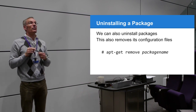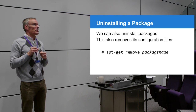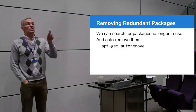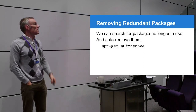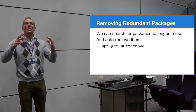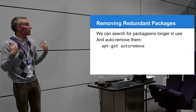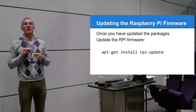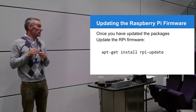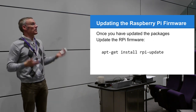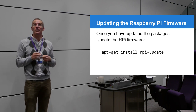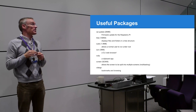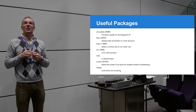To uninstall use `apt-get remove <package name>`. If you've removed a package and other packages are no longer needed, `apt-get autoremove` will search through all packages and dependency files, find anything not required, and delete it to free up space. The first thing I'd do is update the Raspberry Pi firmware: `apt-get install rpi-update`. That will chug along for about five minutes downloading all firmware updates.